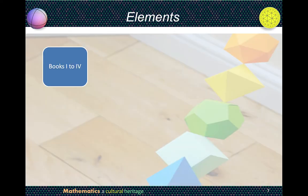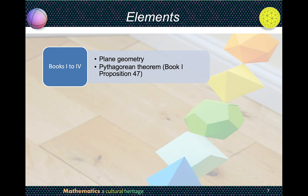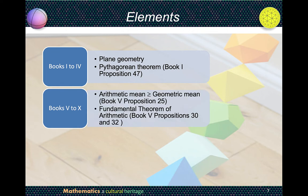The first four books of Elements talk about plane geometry. Proposition 47 in Book 1 is the Pythagorean theorem. Proposition 48 is the converse of the Pythagorean theorem. Important theorems in Books 5 to 10 include: the arithmetic mean is greater than the geometric mean, as well as the fundamental theorem of arithmetic.